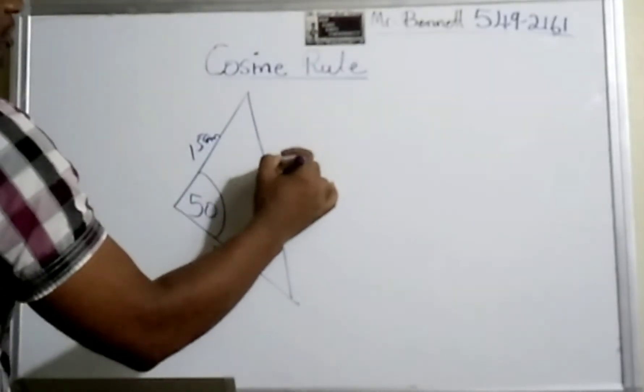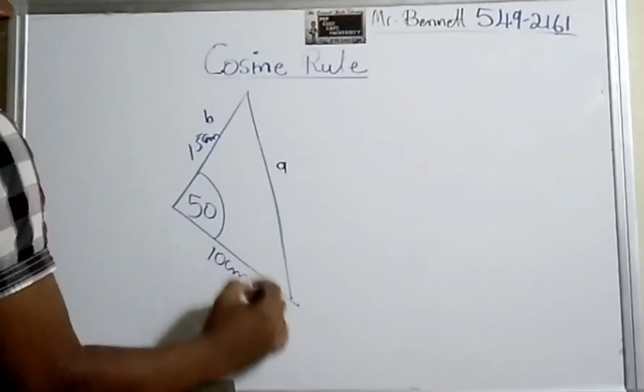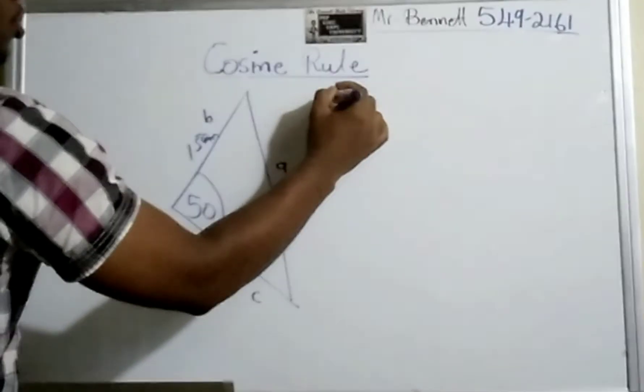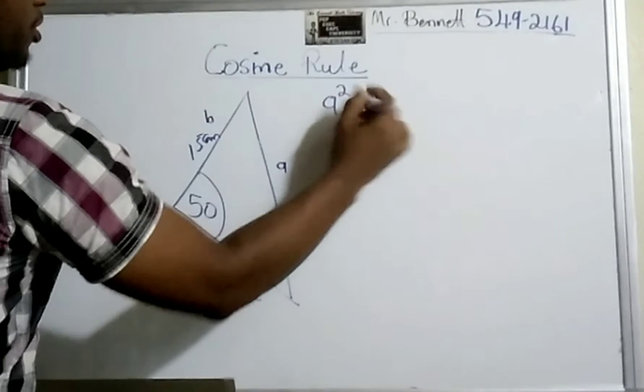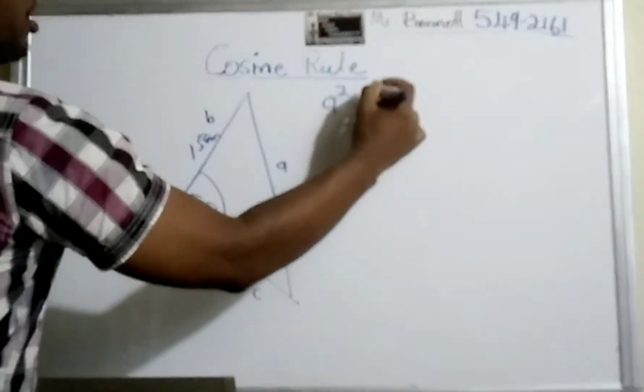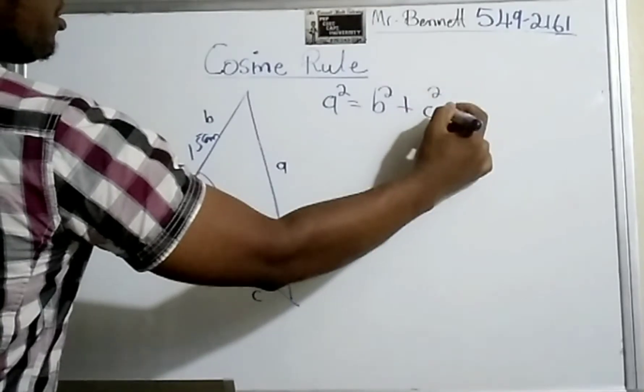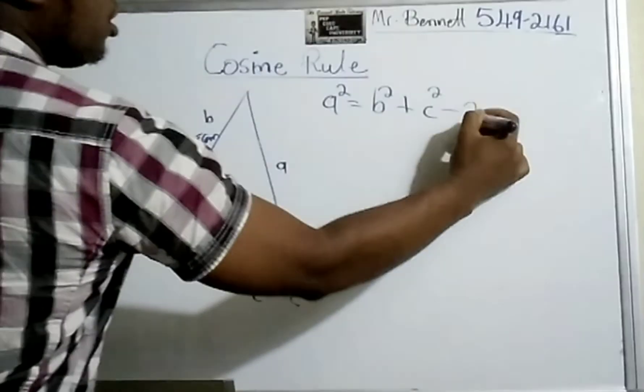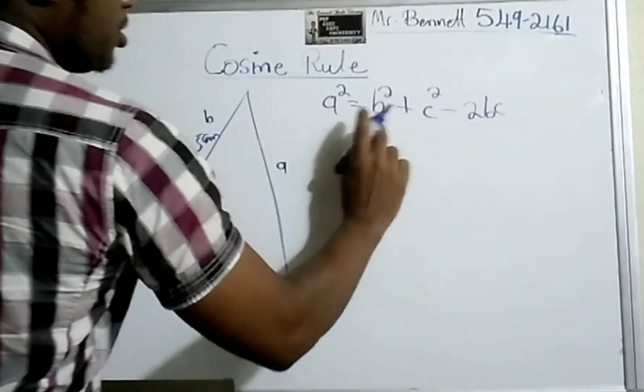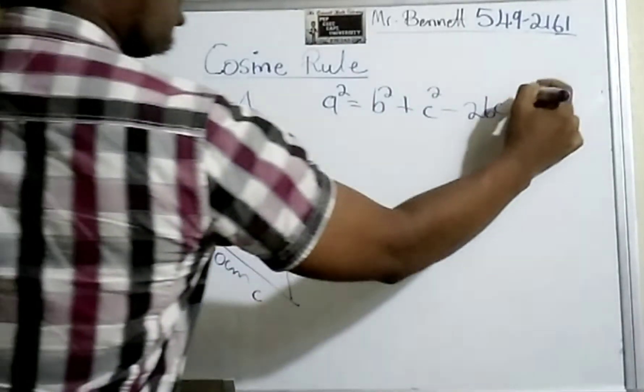For argument's sake, this side B, this side C. So A squared—this is the side we are looking for—is equal to B squared plus C squared minus 2BC cos of the angle.